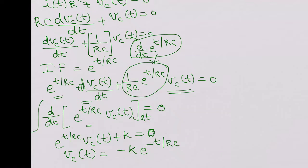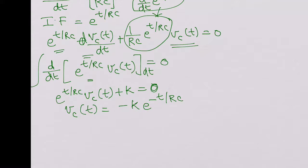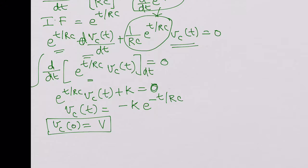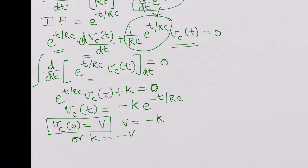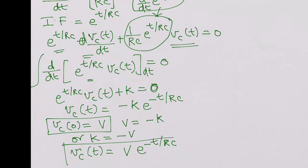Now we substitute our initial condition. Vc(0) = V, since the capacitor was charged. Substituting, V = −k, so k = −V. Therefore Vc(t) = V · e^(−t/RC). This is the equation for the voltage across the capacitor as it discharges.